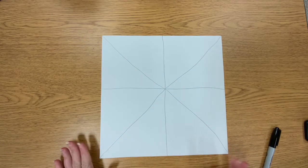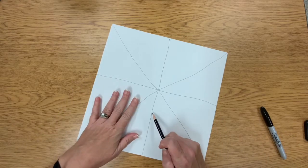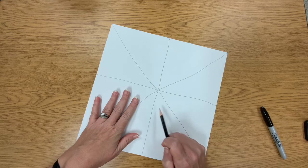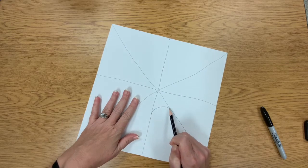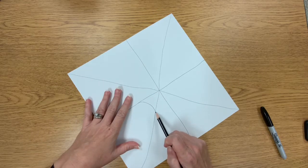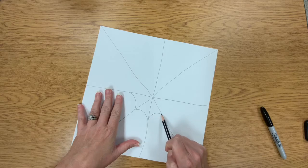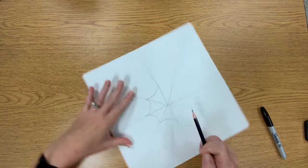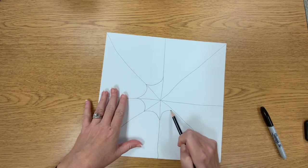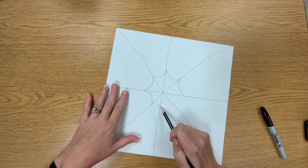Then we're going to draw out our spider web. What we want to do is make a rainbow or a frowny face and stop. I like to turn the paper while I do this because you get used to making that same line and it ends up being a little bit easier if